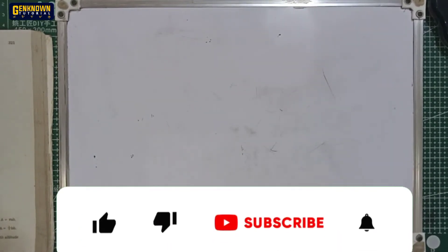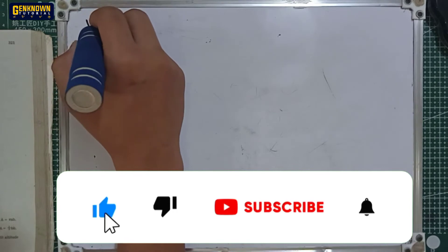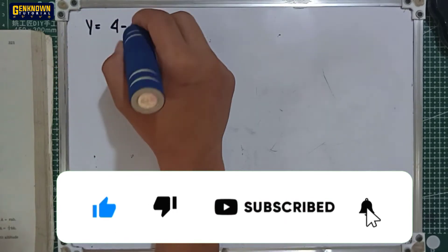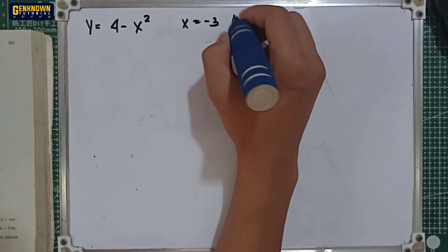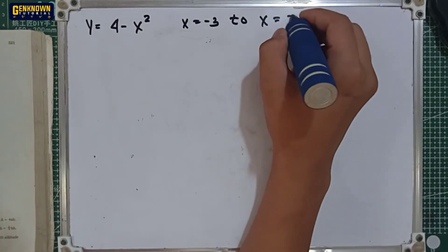Okay, let's proceed in number 4. We have y equals 4 minus x squared from x equals negative 3 to x equals positive 3.